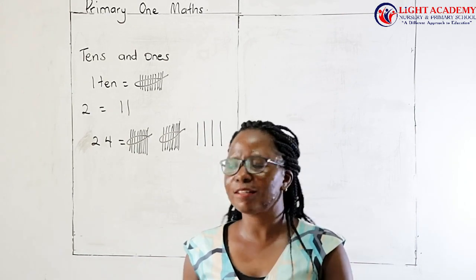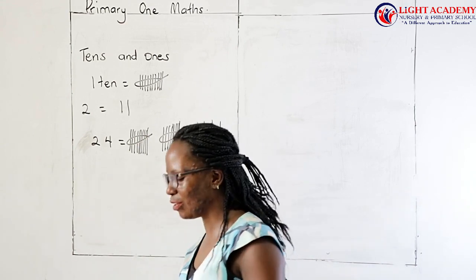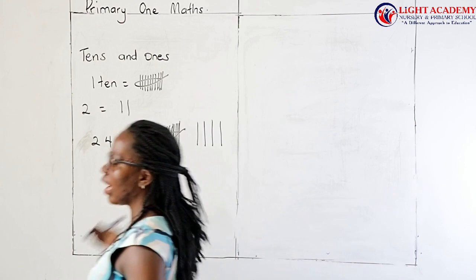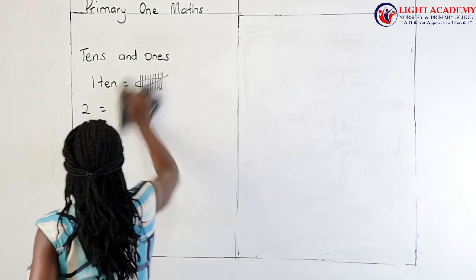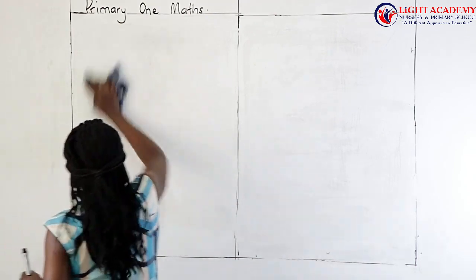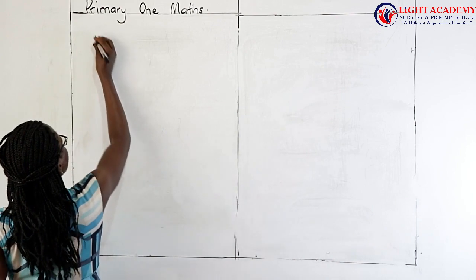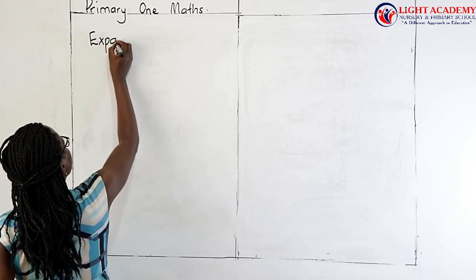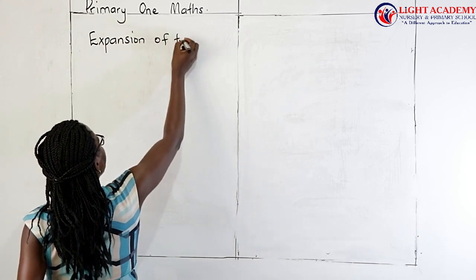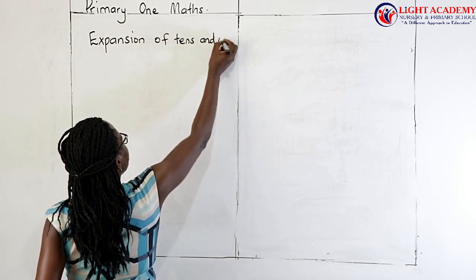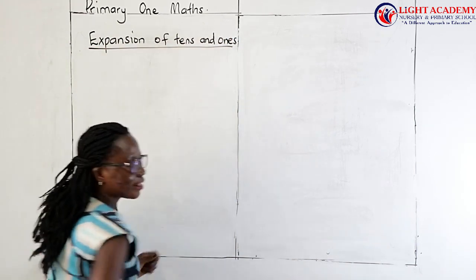This is what we looked at last week. So today, I want us to look at these numbers here. After looking at the tens and ones place values, we are going to see how we can expand these numbers. We are going to look at the expansion of tens and ones.